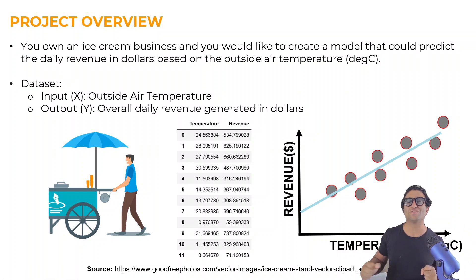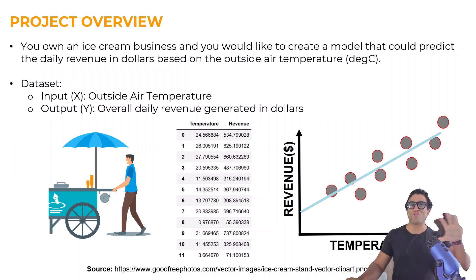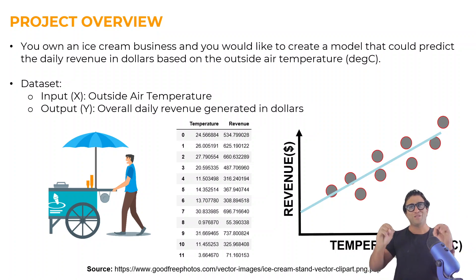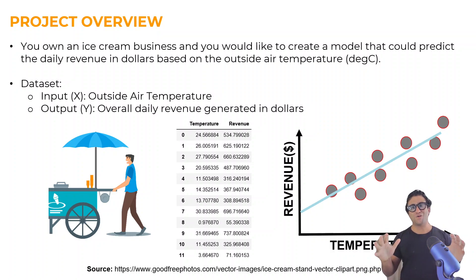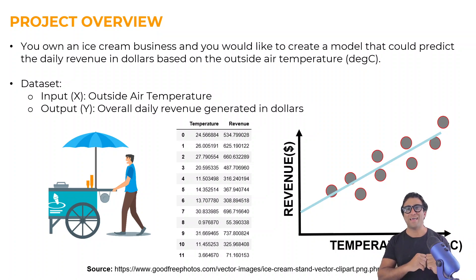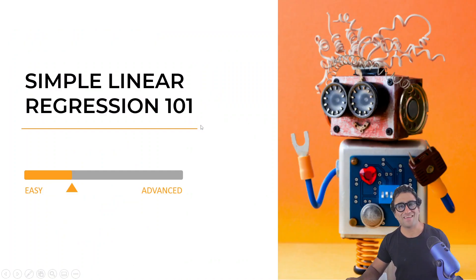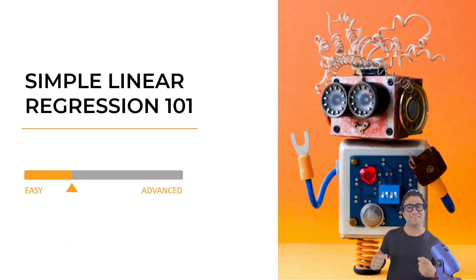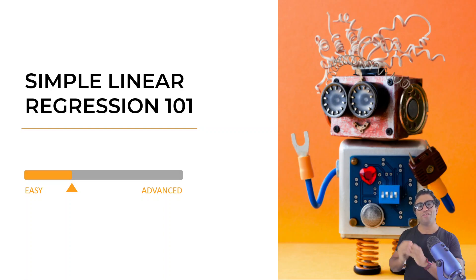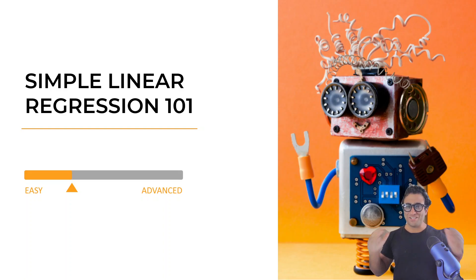That's the project overview. In this project we are going to learn how to build, train, and test a simple linear regression model using the scikit-learn library, which will make our life extremely easy. That's all for this lesson — in the next lesson we will cover simple linear regression in detail. I hope you enjoyed this lesson and see you in the next one.